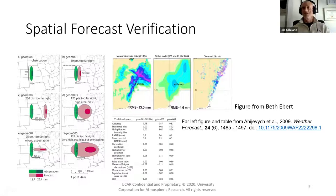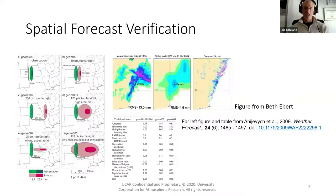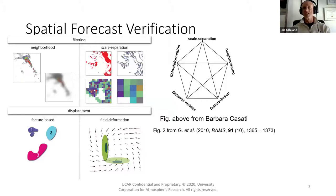Another caveat that we don't often talk about is this idea that observations are a lot of times only available at point locations, and how do you then compare those to the grid. Mostly what we do is we get an analysis so that we have the observations on a grid, and if we need to regrid or rescale things so that they're on the same grid, we do so. Everything I'm going to talk about today assumes that we have a forecast and an observation both on the same grid. I am going to divert a little bit and talk about this issue of the point observation to the grid forecast, because it helps to introduce the method I'm going to be talking about.